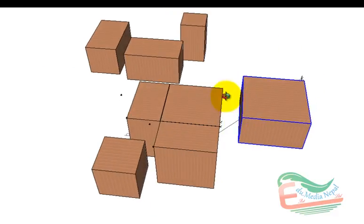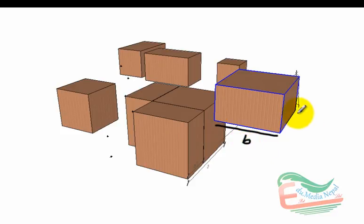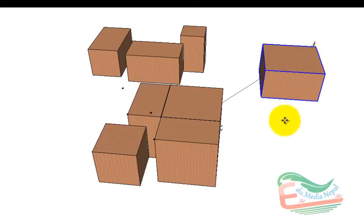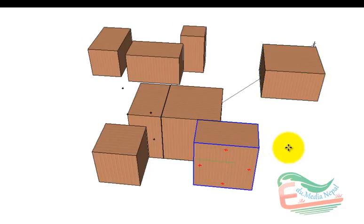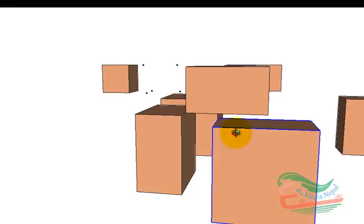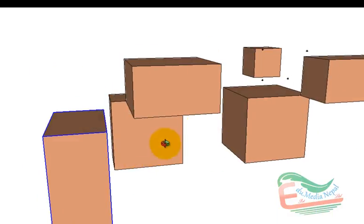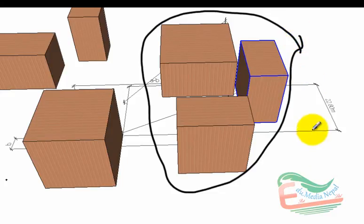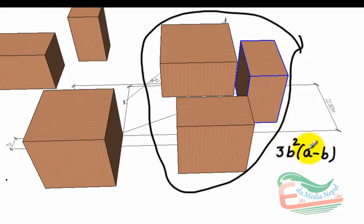Next, let's consider this block, whose dimensions are b times b times a minus b. So volume of this block is b square times a minus b. Let's collect other blocks of the same volume. Here is one block whose volume is b square times a minus b, and here is one more block having the same volume, and one more. So these three blocks together have total volume equal to three times b square times a minus b.